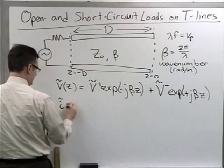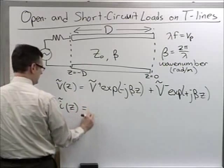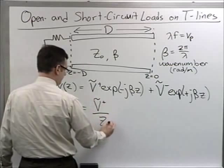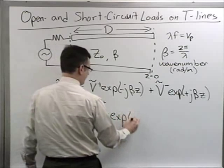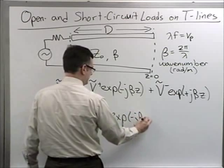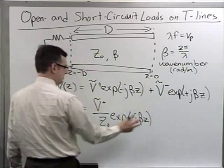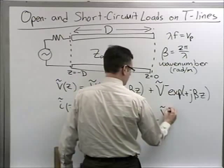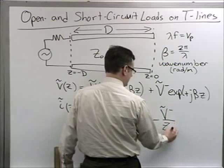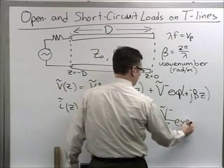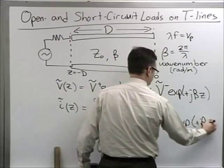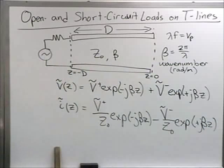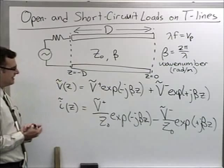Wherever there's voltage, there's got to be current, and that takes on a similar mathematical form. I just divide the amplitudes by the intrinsic impedance and remember to flip the sign. Otherwise, everything remains the same. This is how far we got last time — now let's do something interesting.